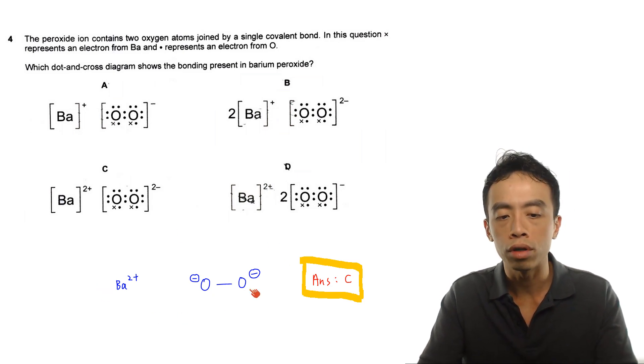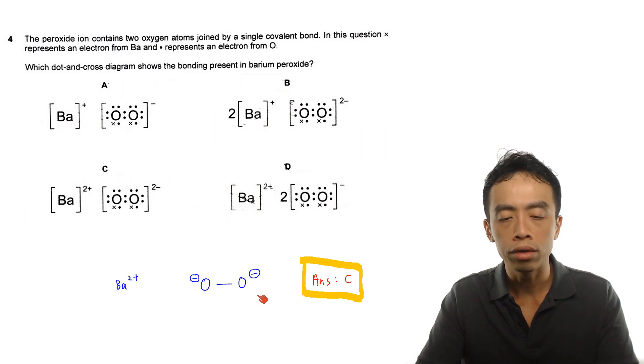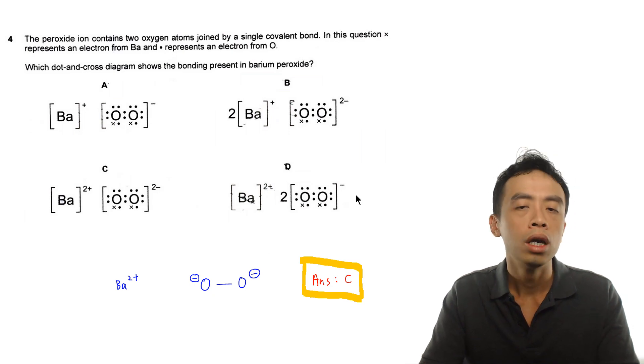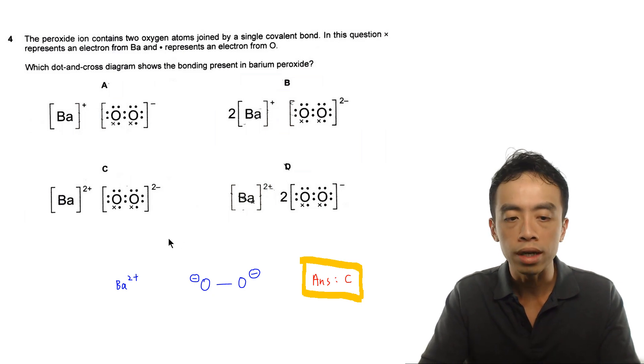So you notice what I've drawn here straight away. I know that barium definitely will be a plus 2 charge. Now for peroxide, if it forms an anion, we can actually deduce this from hydrogen peroxide. So let me show you what I mean. Because hydrogen peroxide, which is H2O2. Now H2O2, if I draw out the Lewis structure, it will be something like this.